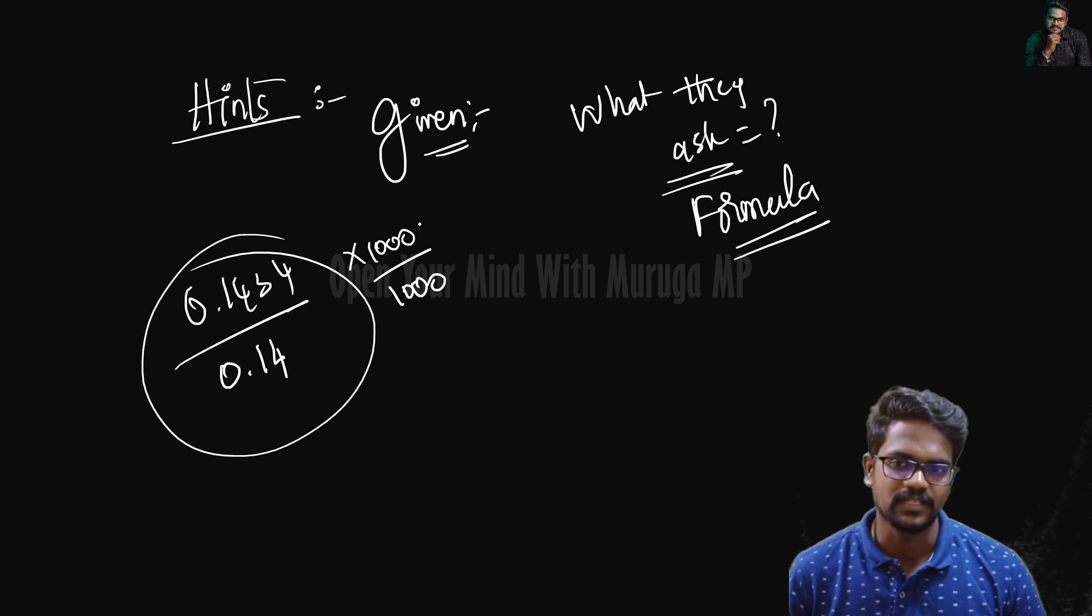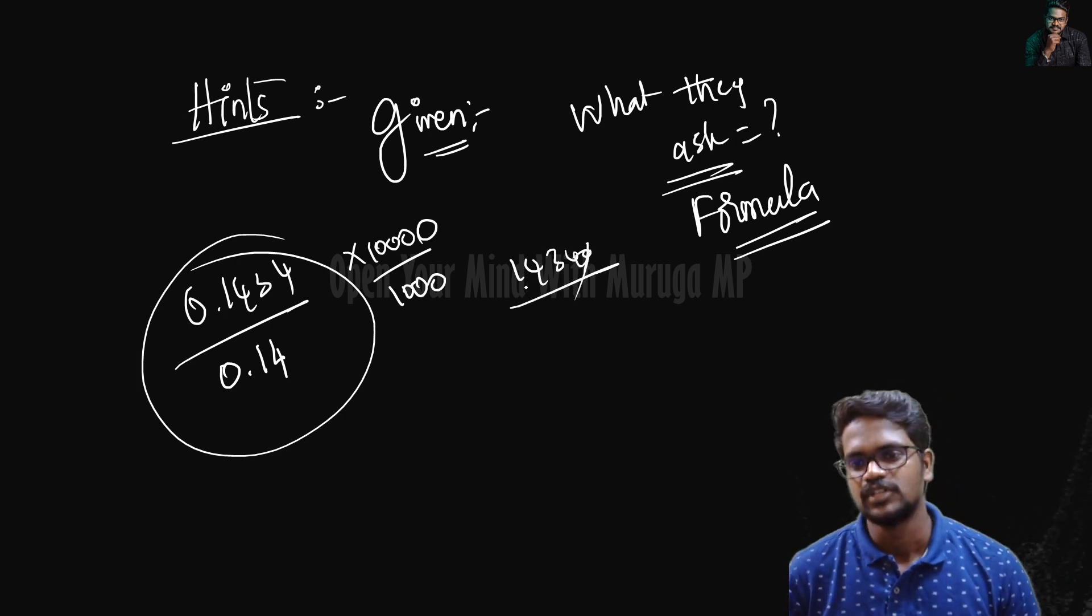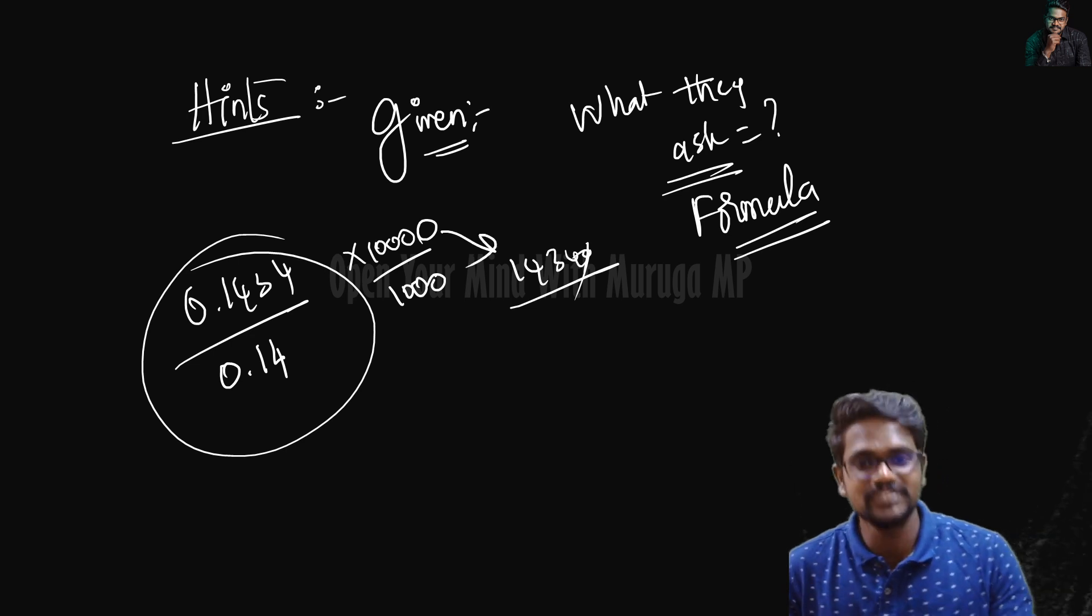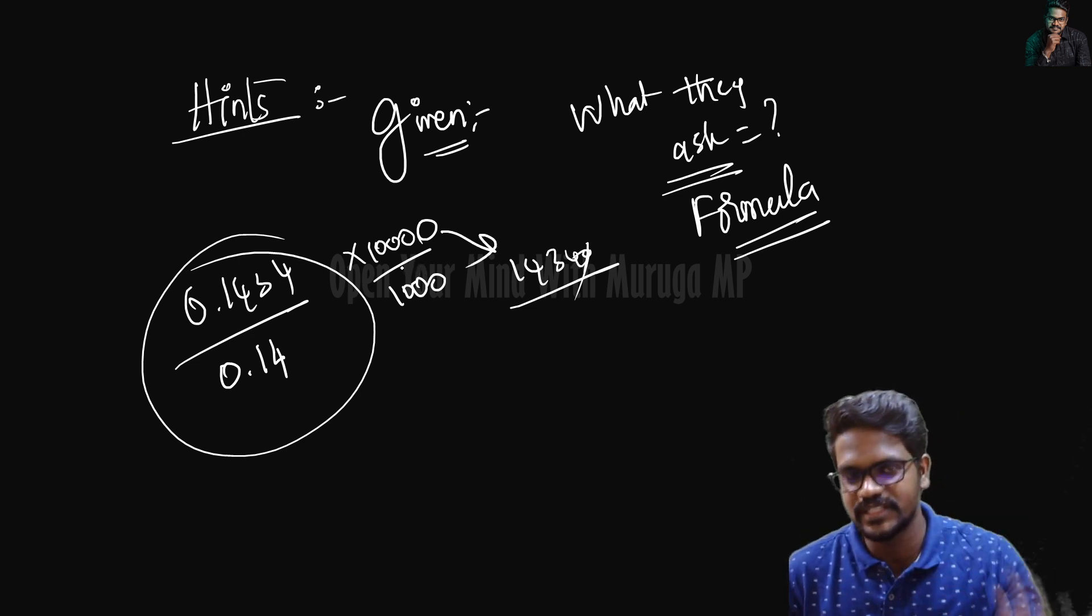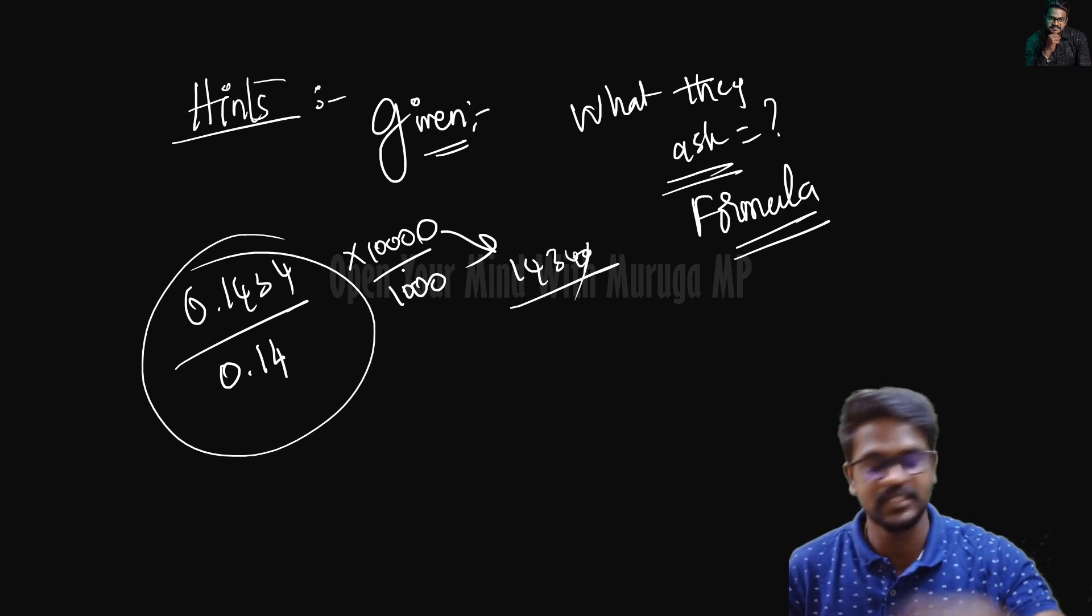This becomes 1, 4, 3, 4, 0. If you need numbers, first convert into whole numbers without decimal. That's one normal number. From that, divide. It becomes very easy.